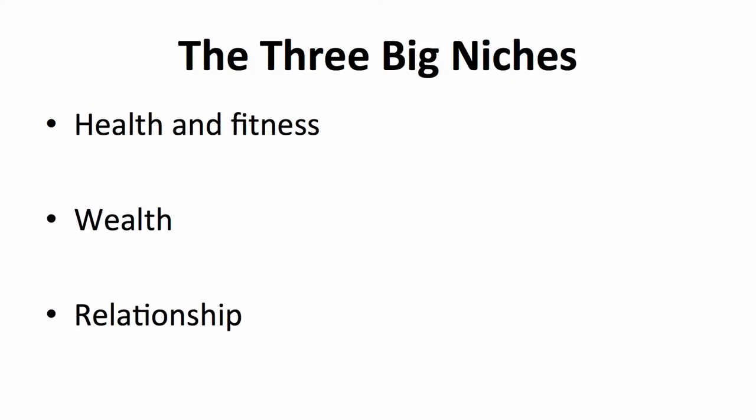There are three big niches in internet business, which are health and fitness, wealth, and relationship. These three niches are wide and generic with more specific sub-niches within them. When it comes to defining your niche, you need to be as specific as possible. You can identify sub-niches by doing some research on Google or internet marketplaces such as JVZoo. Type in your keyword and see what comes up in the search results, and also look closely at the related searches section at the bottom of the search results page.